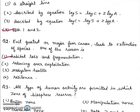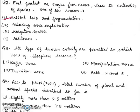Third question: All type of human activity are permitted in which zone of biosphere reserve? Buffer zone, manipulation zone, transition zone, both 2 and 3. Answer will be both 2 and 3.